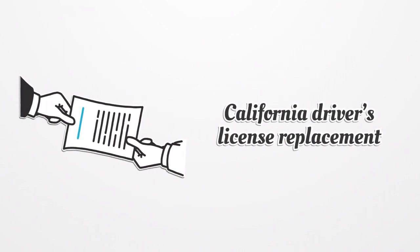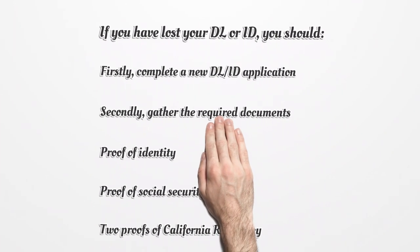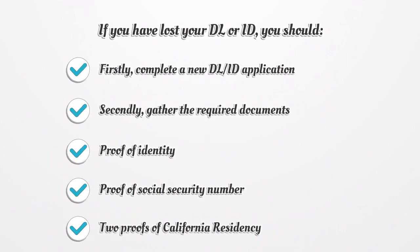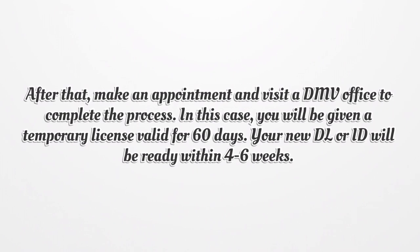California Driver's License Replacement. If you have lost your DL or ID, you should: firstly, complete a new DL ID application; secondly, gather the required documents — Proof of Identity, Proof of Social Security Number, and Two Proofs of California Residency. After that, make an appointment and visit a DMV office to complete the process. In this case, you will be given a temporary license valid for 60 days. Your new DL or ID will be ready within 4 to 6 weeks.